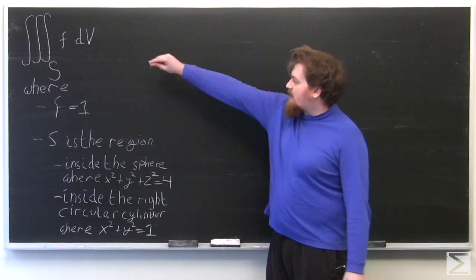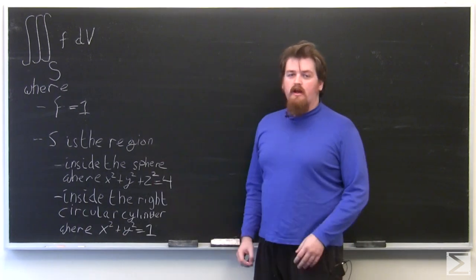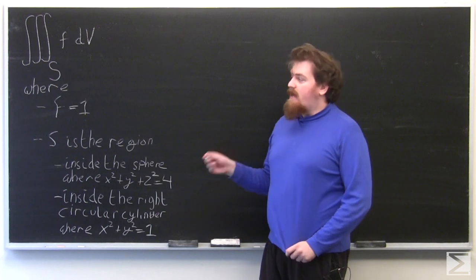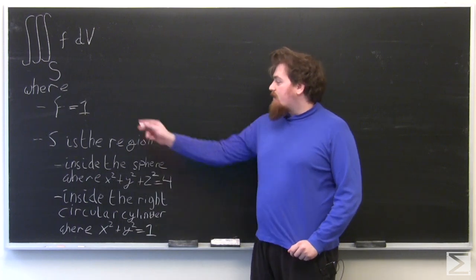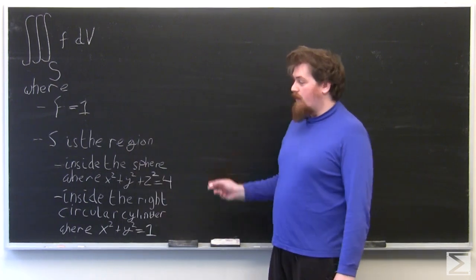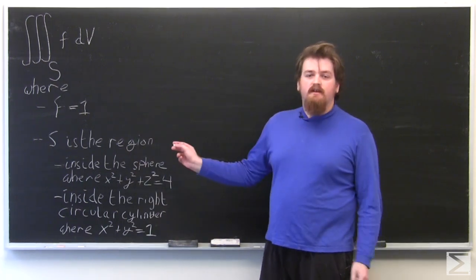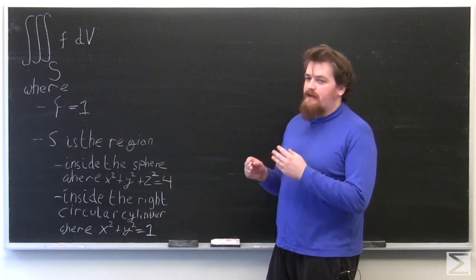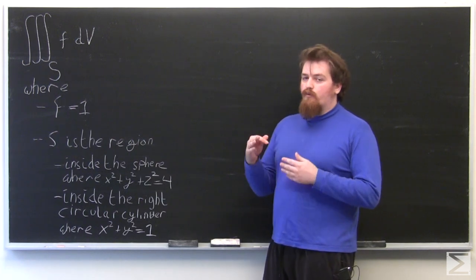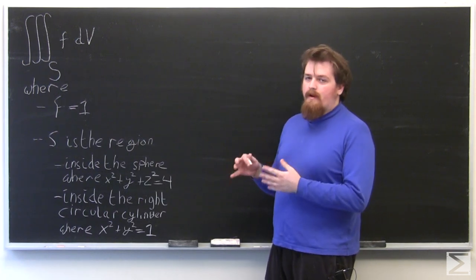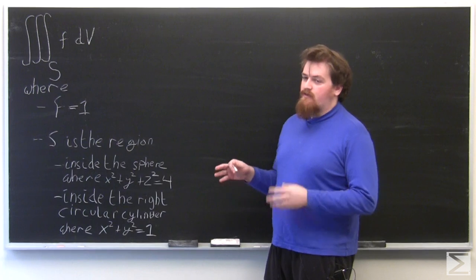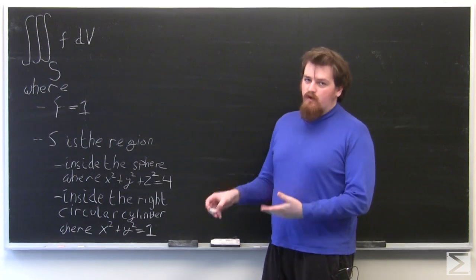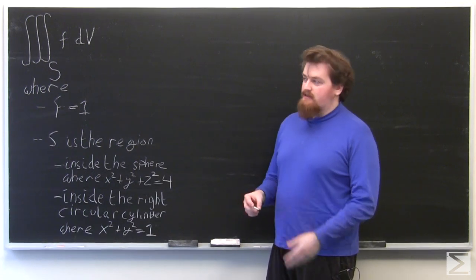In this problem, we want to calculate the triple integral of f over the region S, where f is the constant function 1, and S is the region in R³ inside the sphere of radius 2 about the origin, and inside the right circular cylinder of radius 1 about the z-axis.